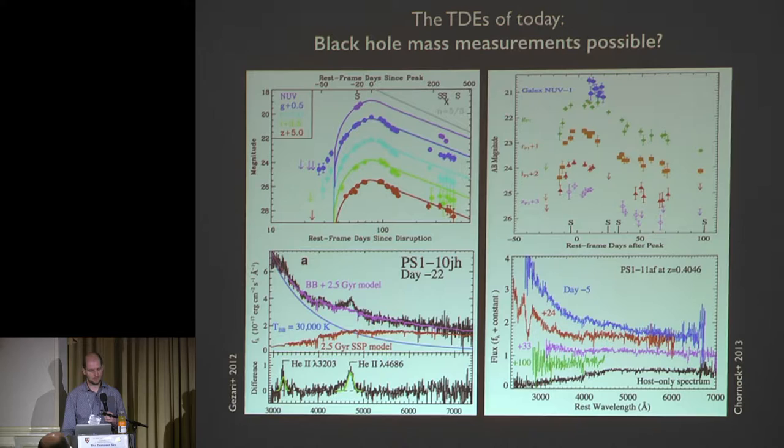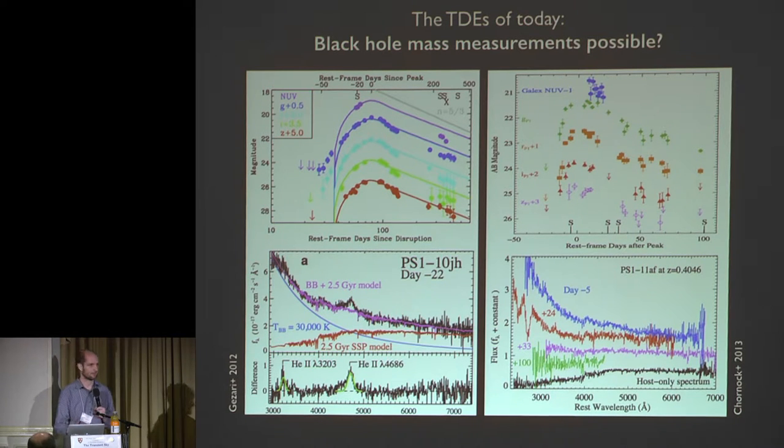Okay, so now I'm going to talk about the observational signatures of the bound debris. So this is the only observation that will appear on my talk because I think Suvi will hopefully go over many of these in her talk. We've had some pretty nice optical flares in the past five years or so from various surveys. These are two examples from Pan-STARRS. They're great in the sense that we have the rise, the peak, and the decay. We have very good color information. We have spectral information that tells us a bit about the ionization state and composition of the gas.